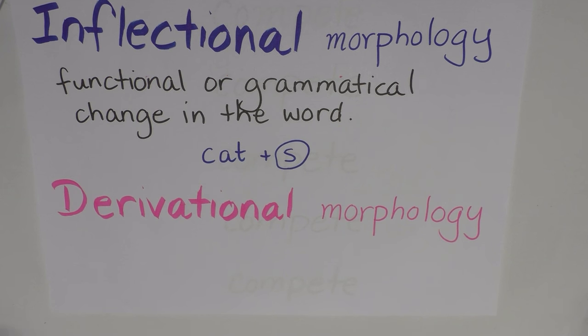Derivational morphology, on the other hand, refers to changes that can be added to words to define their word class or to change their meaning. It derives from the original meaning or the original word class.